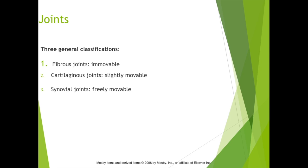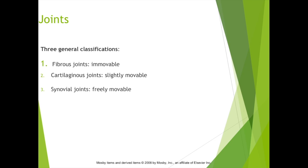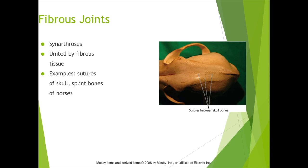Looking at joints, we have three general classifications: fibrous joints, which are immovable; cartilaginous joints, which are slightly movable; and synovial joints, which are freely movable. Fibrous joints, or synarthroses, are united by fibrous tissue — examples include the sutures of the skull and the splint bones of horses and cows. Cartilaginous joints, or amphiarthroses — such as the mandibular symphysis and the pubic symphysis — are capable of slight rocking movements.